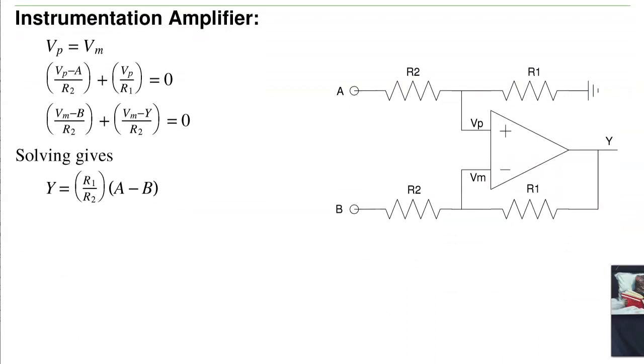Third op-amp circuit is the instrumentation amplifier. This one, I know that V plus equals V minus. Write your node equation at VA. V plus. Current left plus current right equals 0. Node equation at VB. Current left plus right equals 0. And time passes. Eventually you get Y is the ratio R1 over R2 times the difference A minus B.